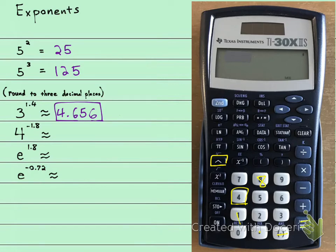4 to the power of negative 1.8 equals. And I get a very small number. I get 0.082469244. Rounding it to 3 decimal places. 1, 2, 3.